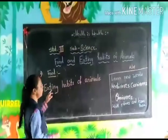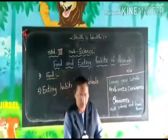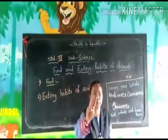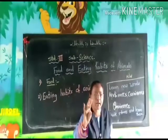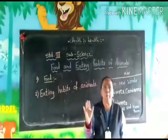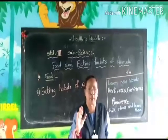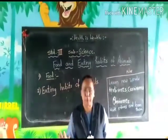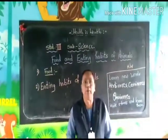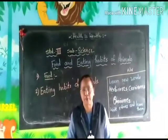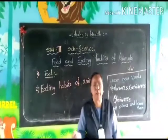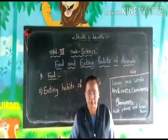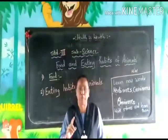Now we will look at the eating habits of animals. Students, the animals are divided into three groups: herbivores, carnivores and omnivores. Herbivores means plant-eating animals — 'herb' means plants or leaves. Carnivores are flesh-eating animals, and omnivores are animals which eat both plants as well as flesh. These animals are grouped on the basis of their eating habits.